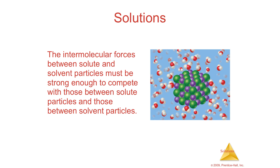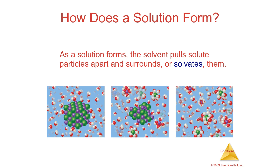If you have ions, those ions have to be ripped apart. Water has all kinds of dipole interactions with charged particles, so it can rip these things apart. The generic term for this is solvation — if you surround a solute molecule with solvent, it's solvated. Hydration is a specific example where water is the solvent and it surrounds the solute particle, completely covering it.